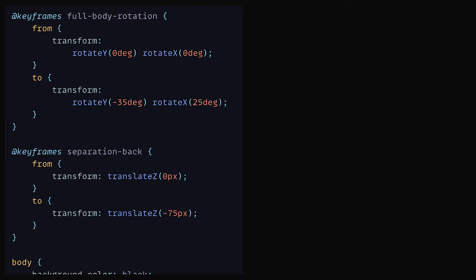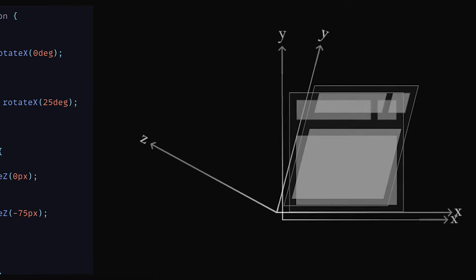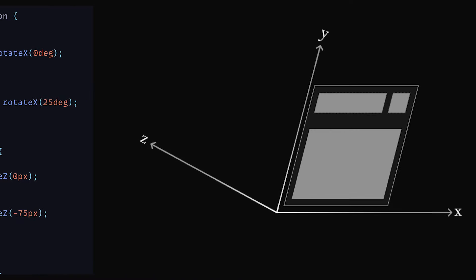Now for a quick overview on the axis of our shape: our animation starts with the y axis going vertically up, the x axis running horizontally and the z axis coming directly towards us. We then rotate the axis by minus 35 degrees on the y and 25 degrees on the x, which puts our entire axis in a new position. In the second animation, we've stated that we want the back to move along the negative z axis. Up until now, we've only been using the x and y axis — or two-dimensional space. With the use of translateZ, we are breaking into the third dimension.